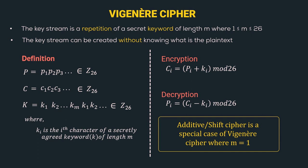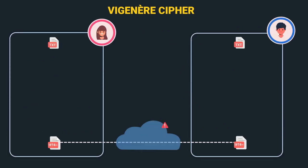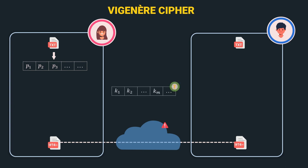Let's go to the diagrammatic representation of a Vigenère Cipher. We have two parties, Alice and Bob, with their respective plain text and cipher text. Alice represents the plain text as a stream of characters p1, p2, p3, and so on. The key stream starts from k1, k2, and so on till km, and the keyword is repeated to generate the key stream. This key stream is shared between Alice and Bob via a secure key exchange channel.